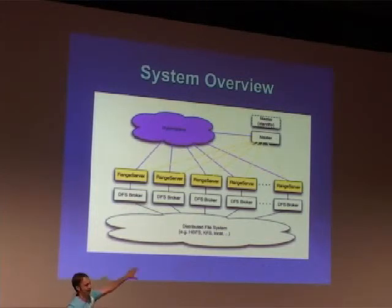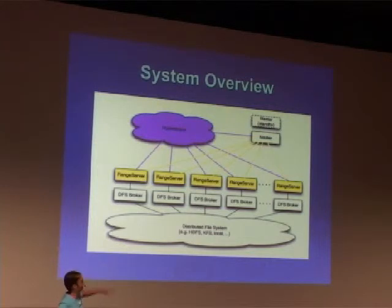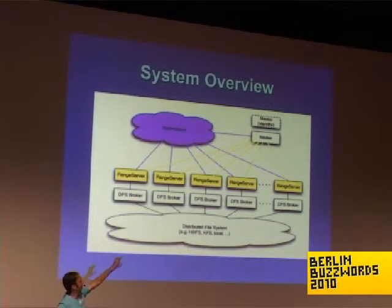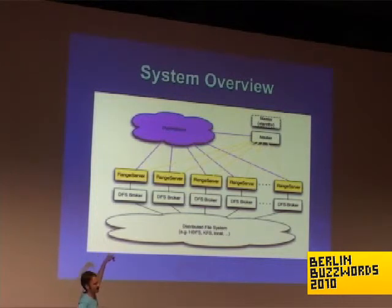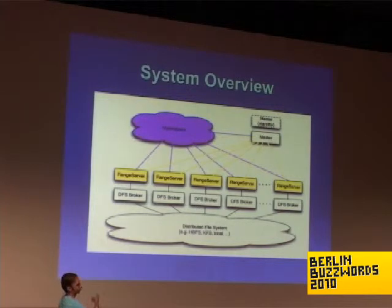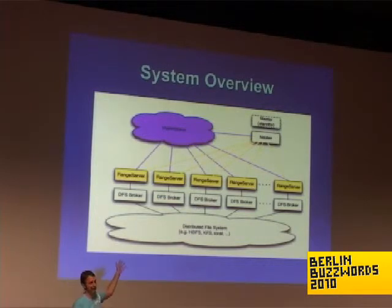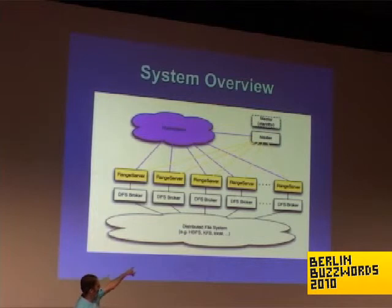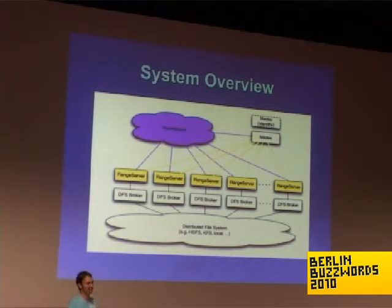This is the Hypertable 10,000-foot overview. This big cloud at the bottom is the distributed file system — typically we run on top of the Hadoop Distributed File System. On each machine, the bulk of machines in your cluster will be running a range server. We've designed the system so the range server speaks to a DFS broker. The DFS broker talks a normalized protocol to the range server and the specific file system protocol on the other side, allowing you to run Hypertable on top of any distributed file system you want. We've got brokers for HDFS, KFS, Ceph, and one called the local broker that reads and writes to the local file system, which is useful for testing.